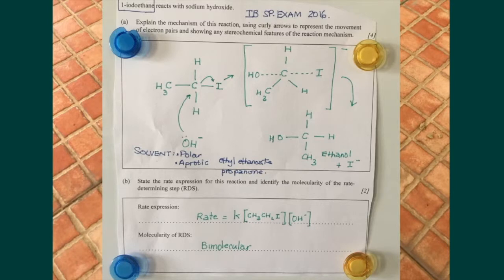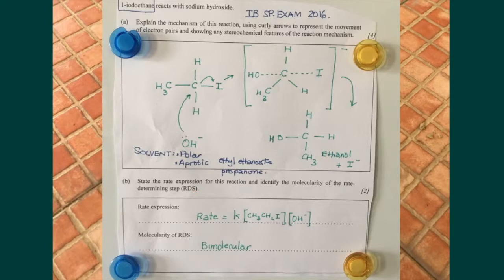The rate of this reaction depends on two molecular entities: the nucleophile and the halogenoalkane. So the rate expression is: rate = k[I⁻][OH⁻] — rate is equal to k times the concentration of iodoethane times the concentration of the hydroxide ion. Such a reaction is said to have a rate determining step, an RDS, that is bimolecular.